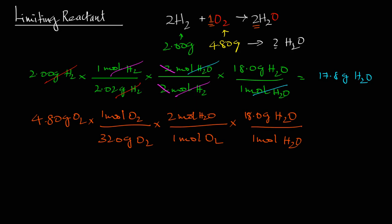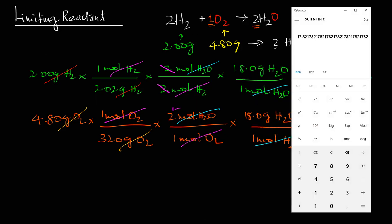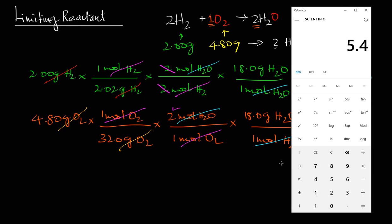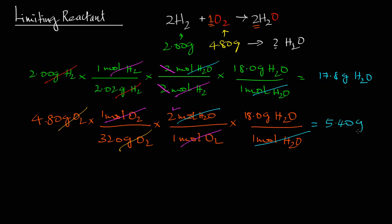Let's cancel out the units: gram oxygen cancels, mol O₂ cancels, and finally mol water cancels. We still keep the factor of 2 in the numerator since it is divided by 1. So we have 4.80 times 2 times 18.0 grams of water divided by 32.0, which gives 172.8 divided by 32, equaling 5.40 grams of water. These numbers have 3 significant figures, so the answer is 5.40 grams of water.